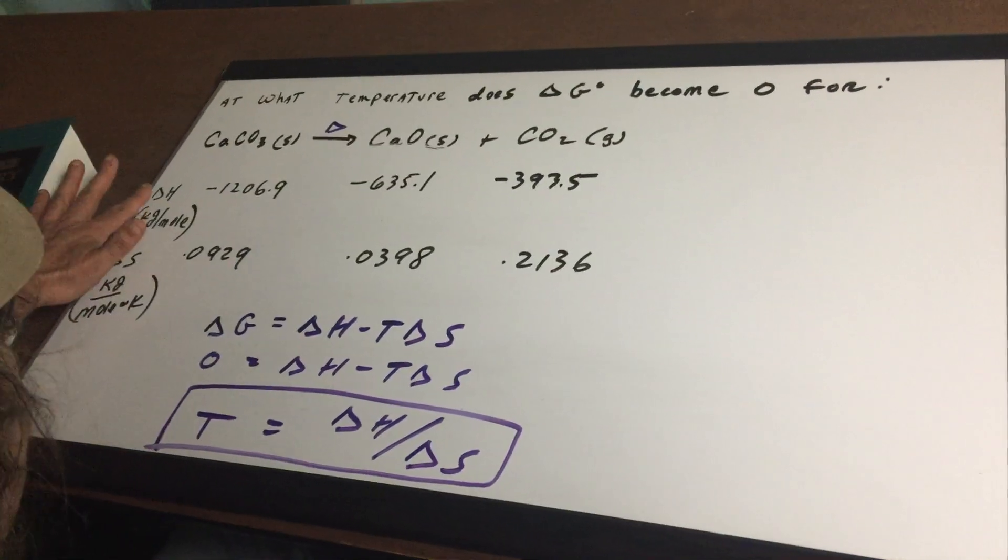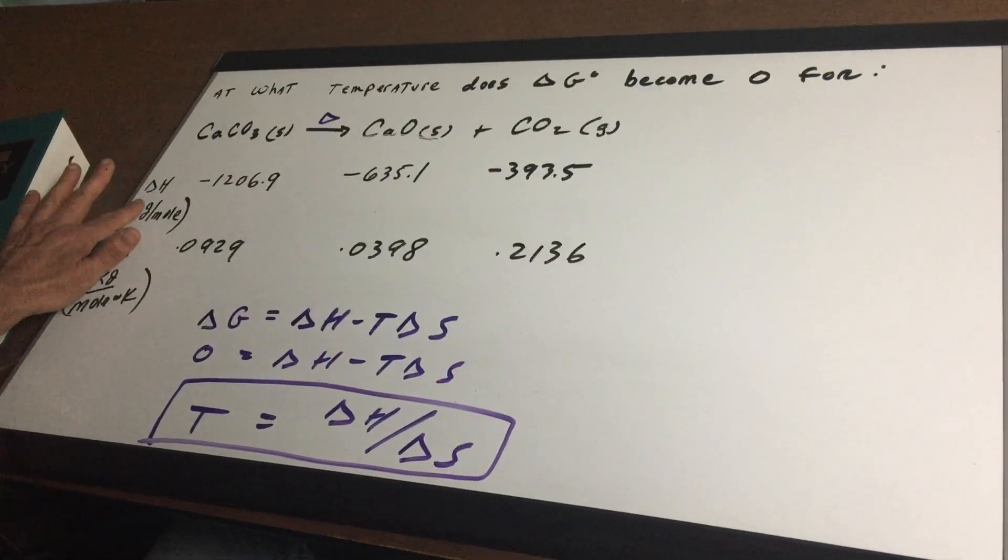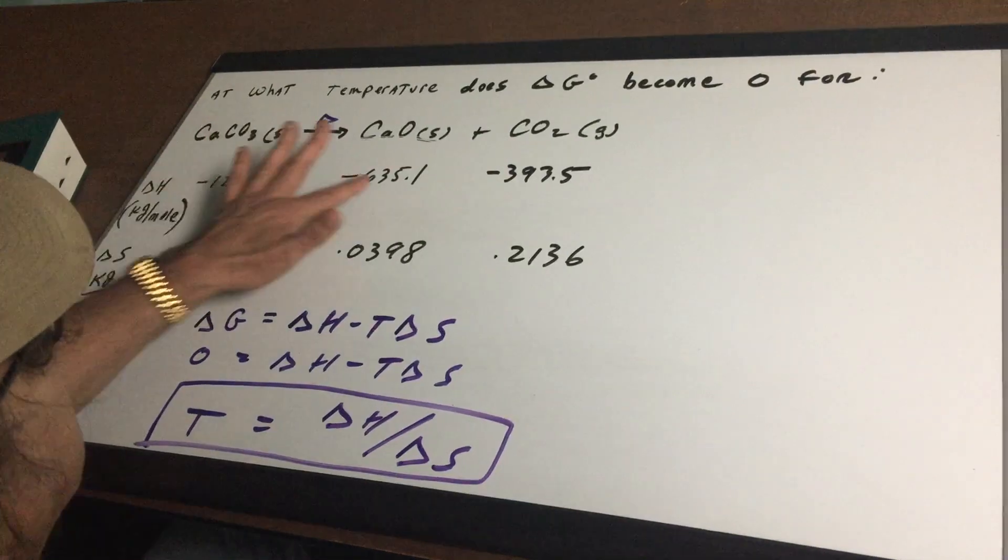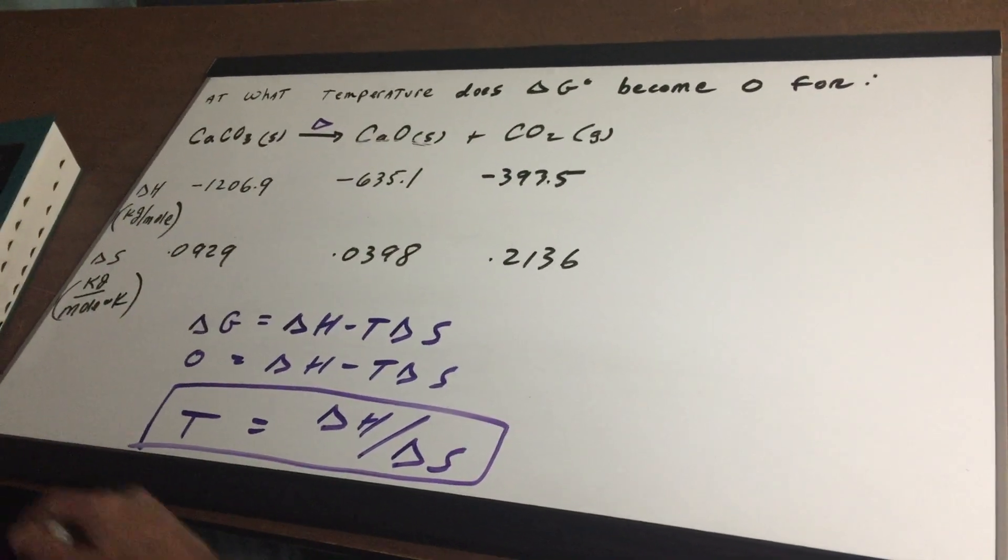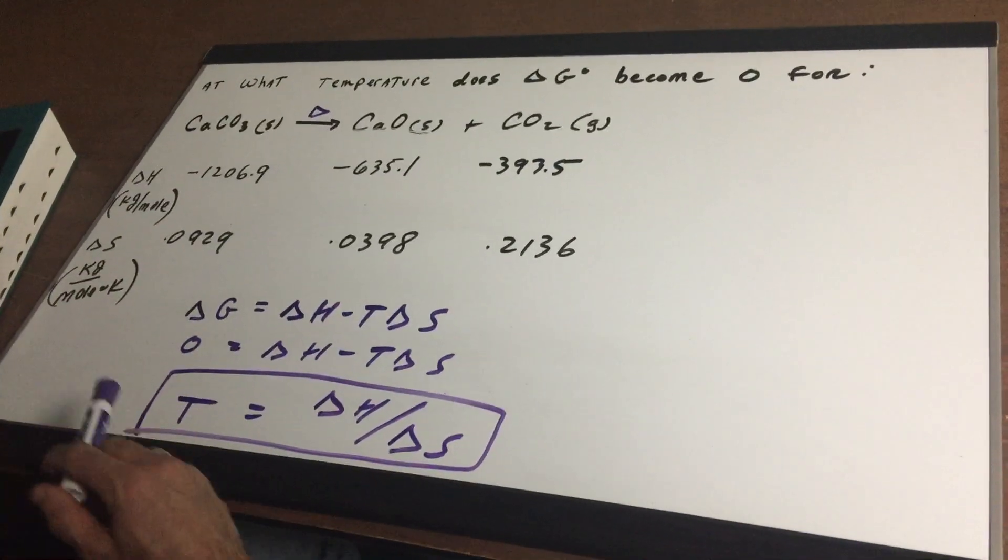And what it's going to do, it's going to break apart into calcium oxide and CO2 gas. And I gave you the values of the Delta H, which is in kilojoules per mole. This is the Delta H of each one. And I gave you the Delta S or the entropy in kilojoules per mole Kelvin.